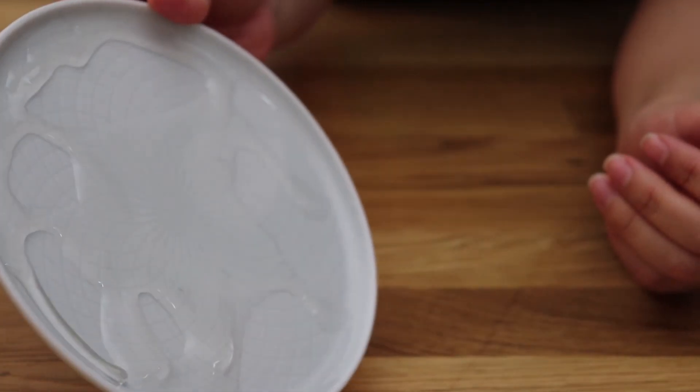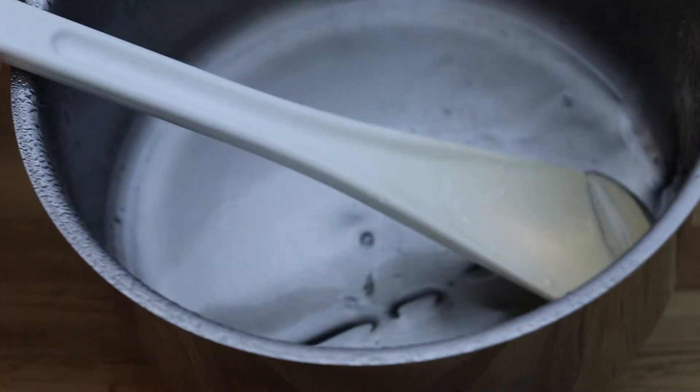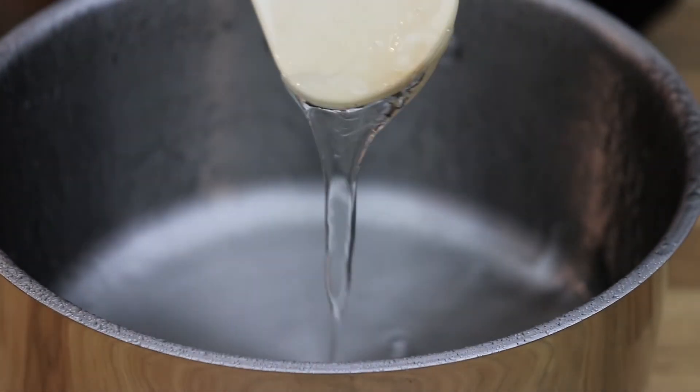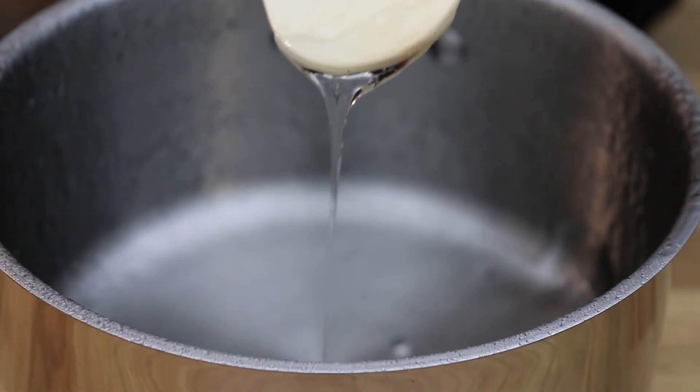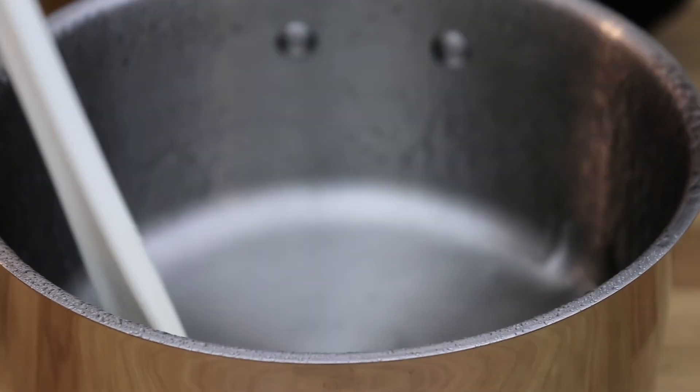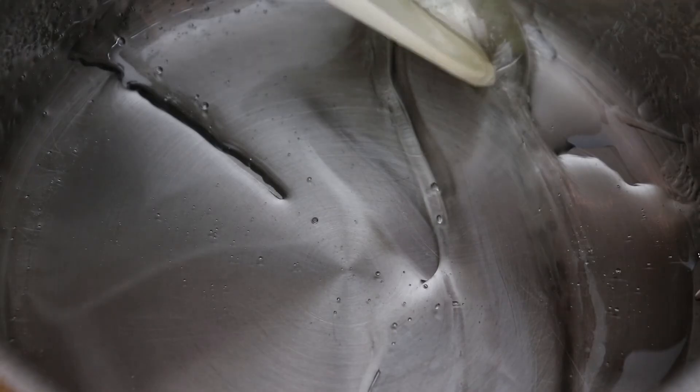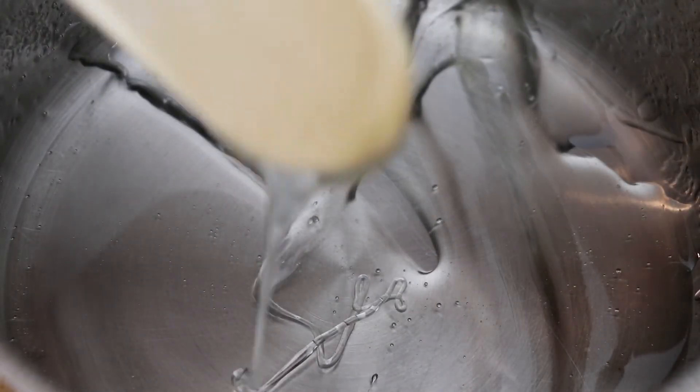This is just another sweetener that has similar properties to glucose. It retains moisture and it avoids crystallization from the sugars. So it's really useful for things like making really smooth ice cream or making super chewy cookies, for example.